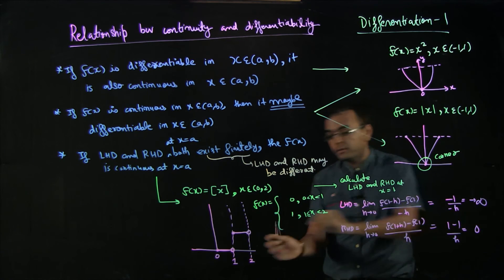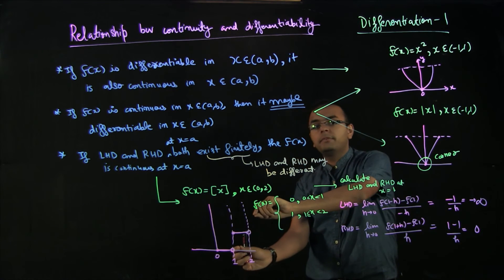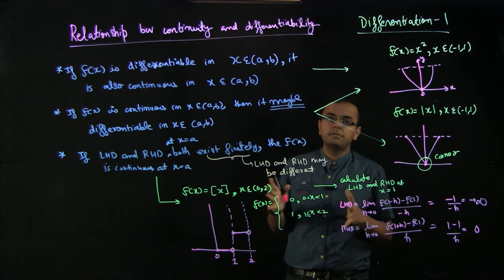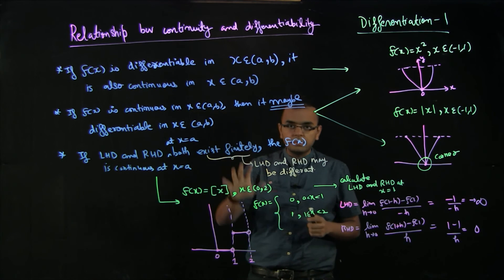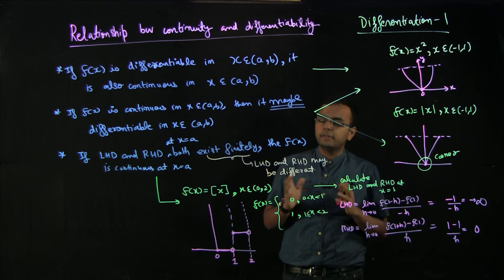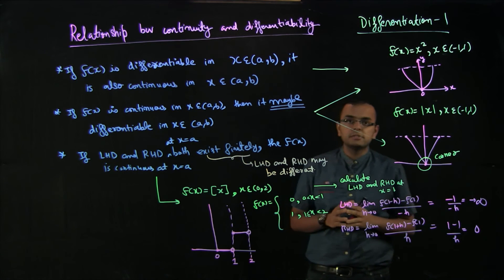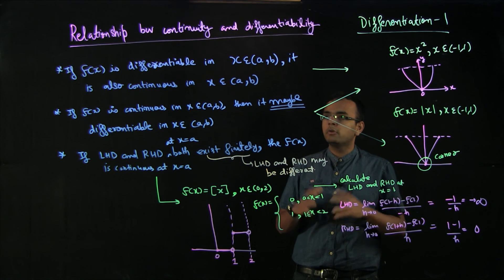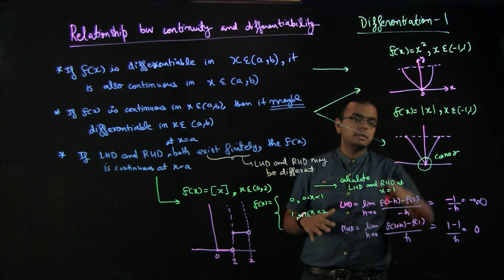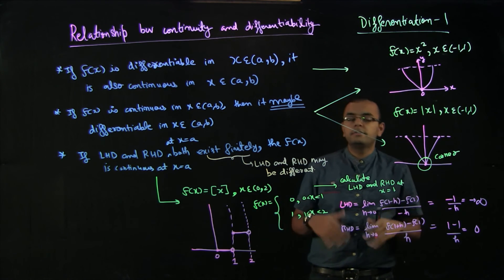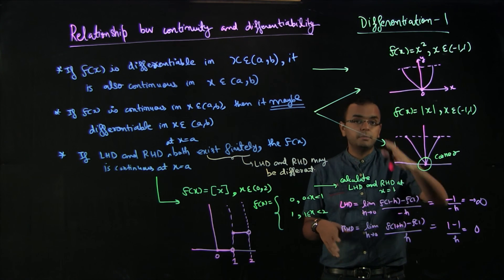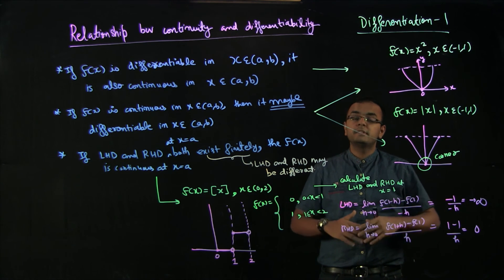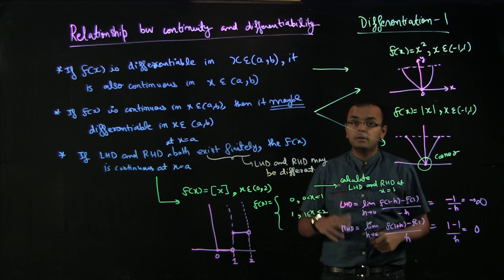Whenever there is an infinite derivative, you see a very quick jump. That is the idea behind the relationship between differentiability and continuity. Using a graphical approach: whenever the function is smooth, it is differentiable and continuous; whenever there is a corner, it is not differentiable; whenever there is a break, it is both discontinuous and not differentiable.